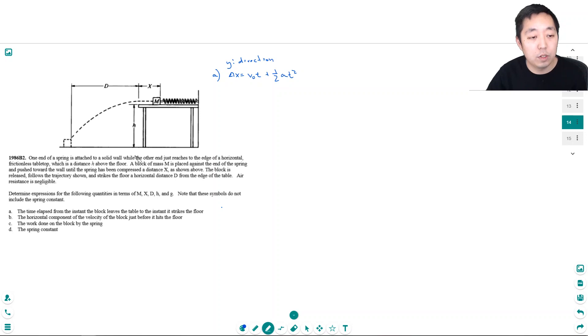Its vertical displacement is going to be h. Its initial velocity in the y direction is zero, so this is zero. One half g t squared. So t would equal square root of 2h over g. Okay, that's part a.